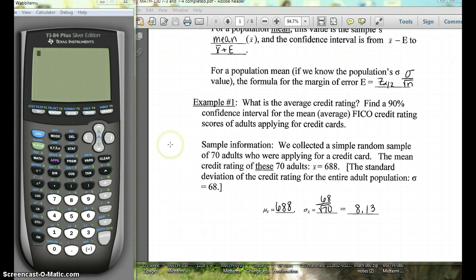So here's an example. It says what is the average credit rating? Find a 90% confidence interval for the mean or the average FICO credit rating scores of adults applying for credit cards.